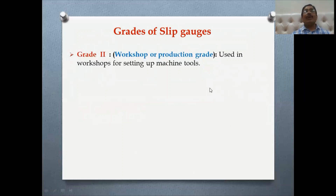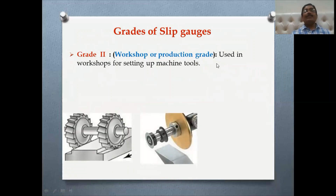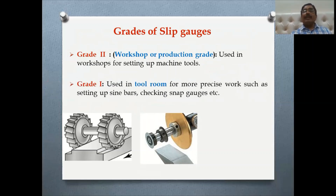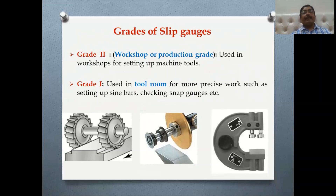The grades of slip gauges: there are five grades. The first is Grade 2, also called the production grade. In workshops, for example, two milling cutters mounted on an arbor — the distance between these two cutters can be set using Grade 2 slip gauges. Another example: a cutter can be set to a certain height from the table using slip gauges.